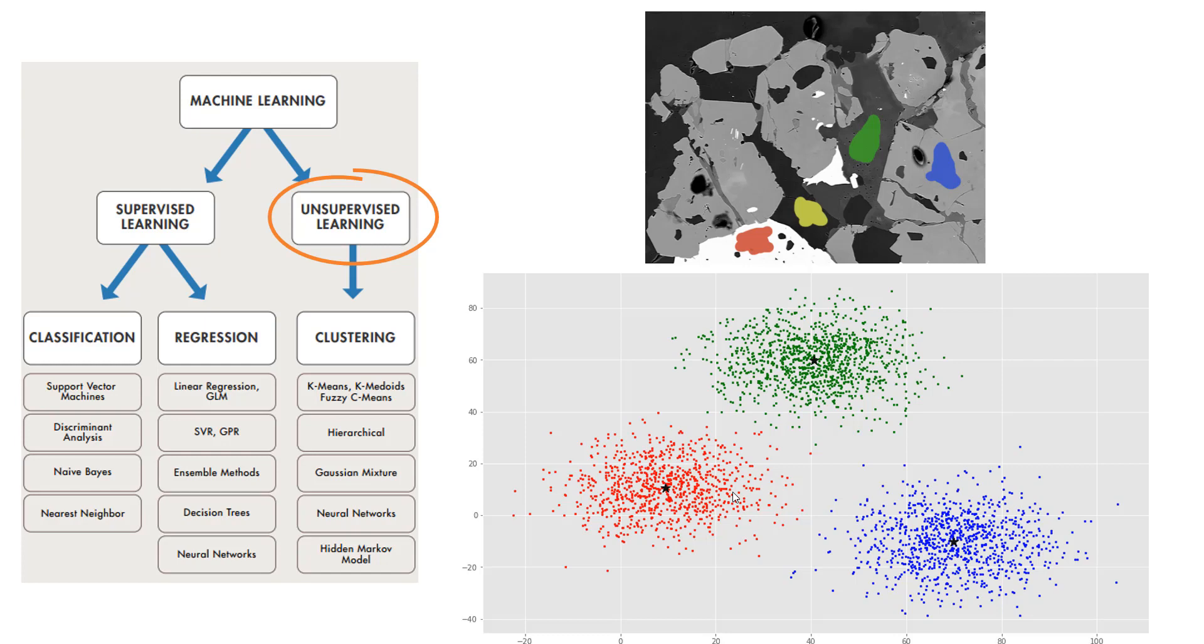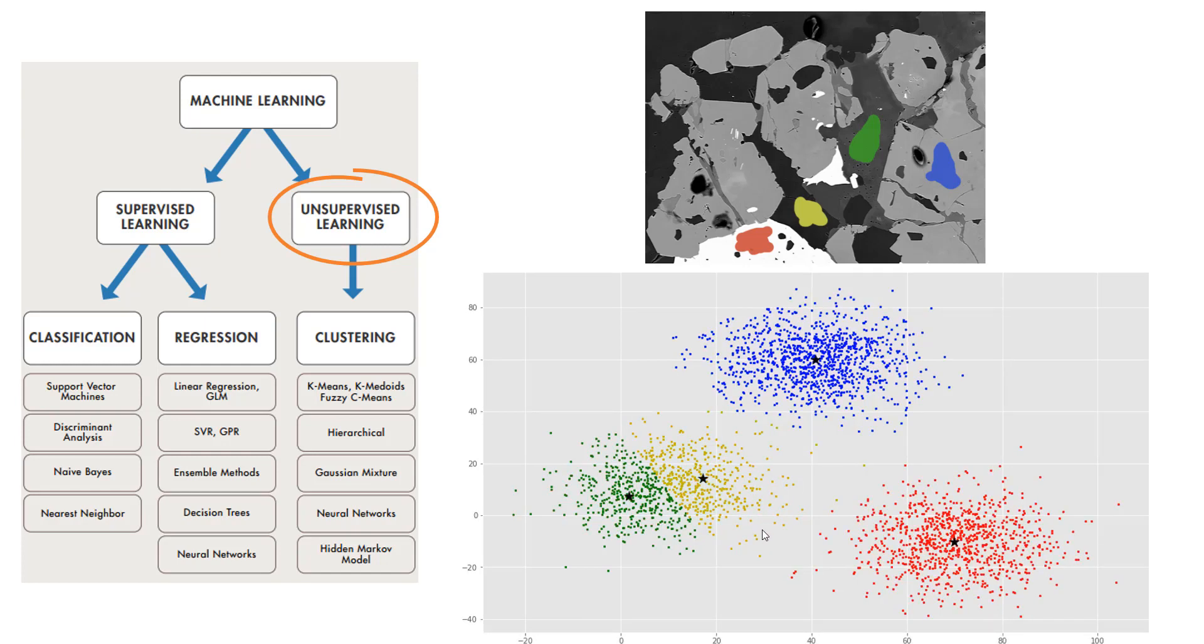If you say three is not enough, I want four, then of course it's going to do that. Whether it is right or wrong, it's up to you to validate it after looking at the result. But it is going to find four centroids based on the data that you have provided. That's k-means example, a clustering example.